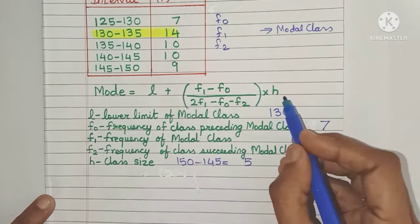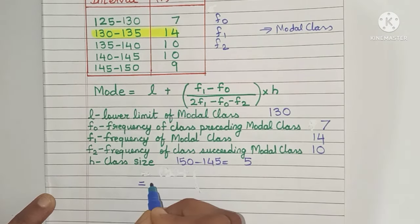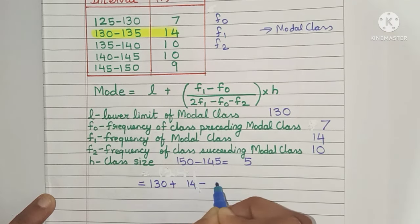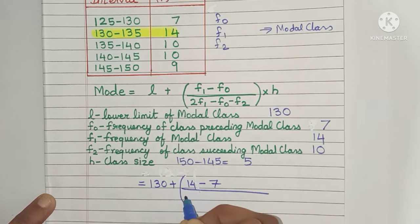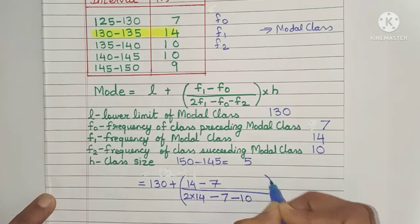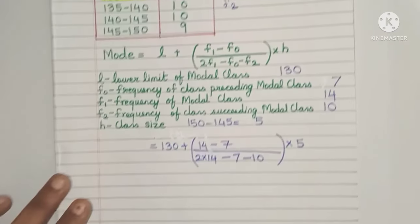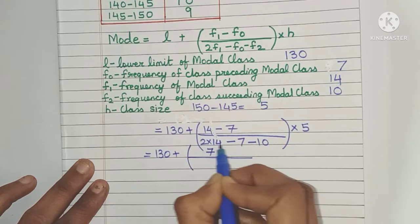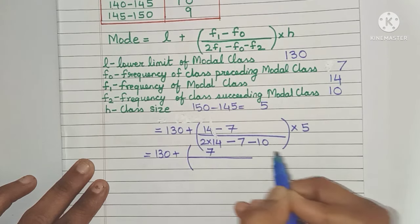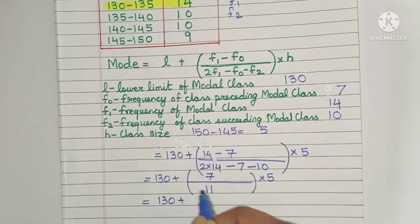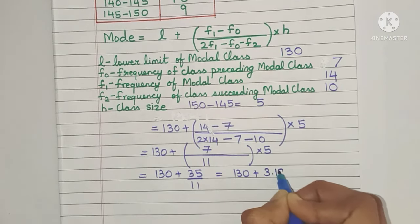Now let's put all values into the equation: L = 130, plus (F1 minus F0) = (14 minus 7), divided by (2 times 14 minus 7 minus 10), all multiplied by H = 5. Solving: 130 plus 7 over (28 minus 7 minus 10) times 5, which is 130 plus 7 over 11 times 5, giving 130 plus 35/11, which equals 130 plus 3.182.